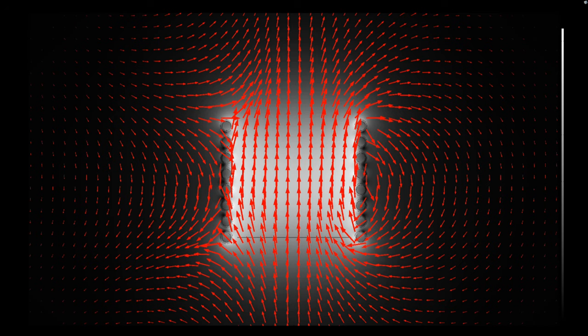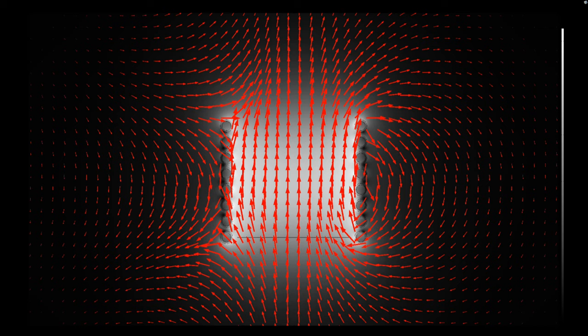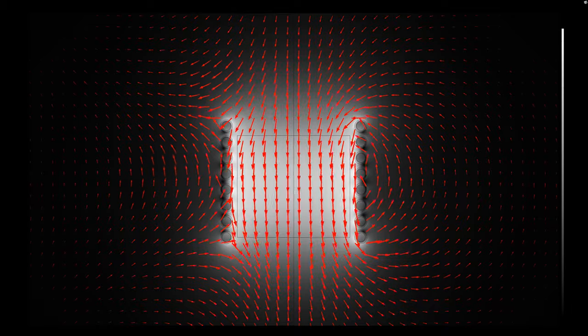When we apply direct current to coil it creates static magnetic field. If we supply alternating current, magnetic field around coil changes along with applied current.